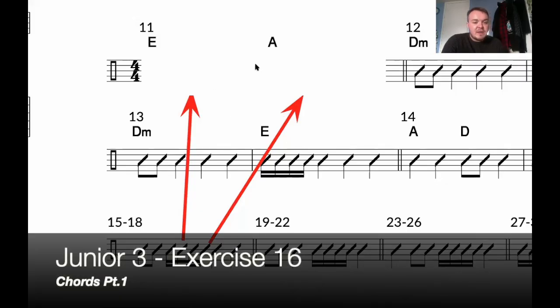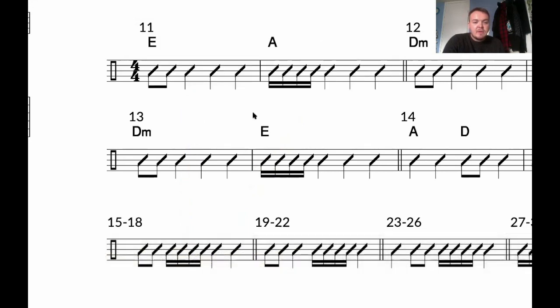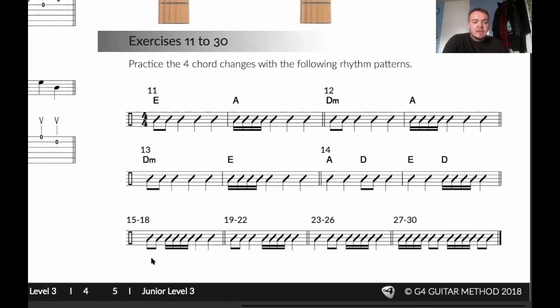Exercise 16 of junior level 3. Now we've done exercise 15, let me get rid of that. So now we are looking at the second one within this. We're looking at the second exercise - that's the first one and that's the second one. So we're putting these chords D minor and A into the same rhythm that we just did for 11.